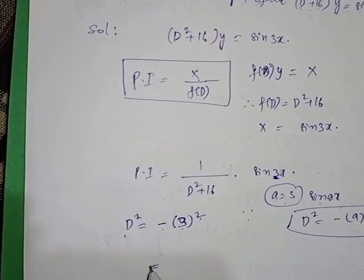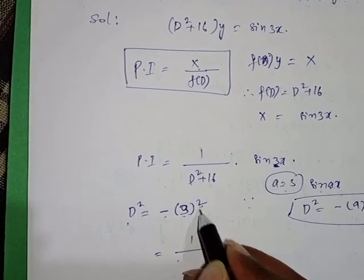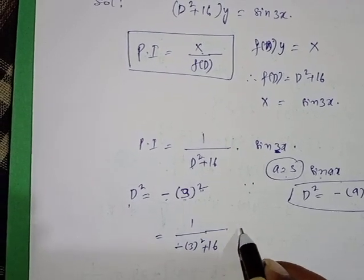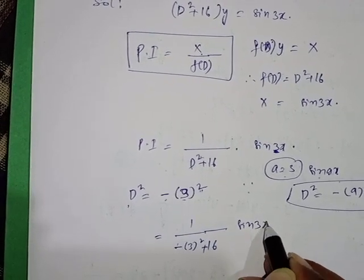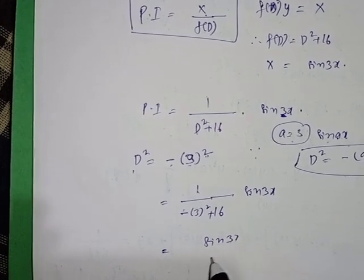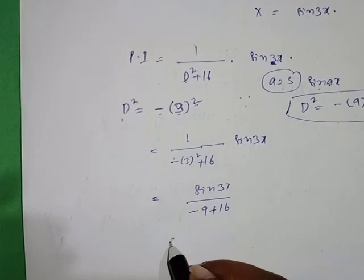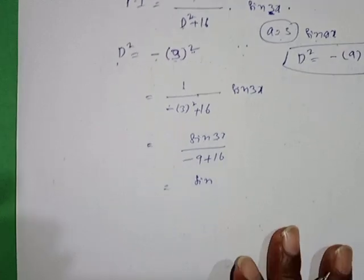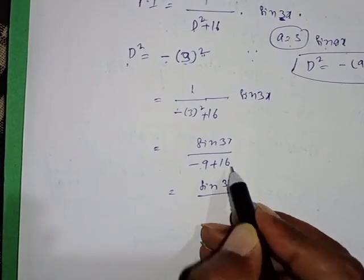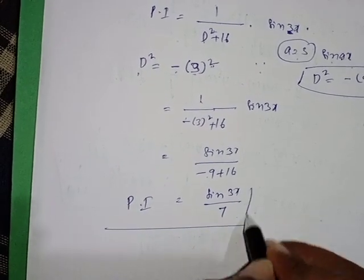Substituting, that is equal to 1 upon D squared, where D squared equals negative of 3 squared, giving: negative 3 squared plus 16 into sin 3x, which equals sin 3x upon minus 9 plus 16, which equals sin 3x upon 7. This is the particular integral of the given equation.